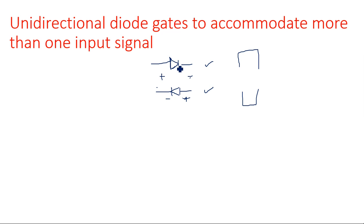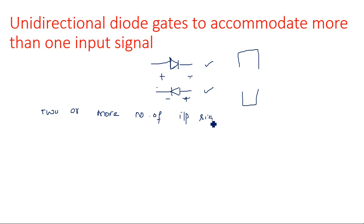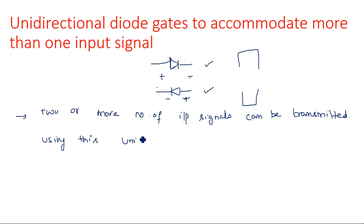In the previous unidirectional sampling gate we could transmit only one signal — we gave one input signal and one control signal. The control signal is a timing or gating signal used to switch on the diode. This same concept is now going to be extended by accommodating more than one input signal using unidirectional diode gates.